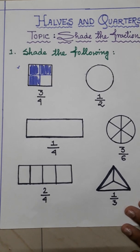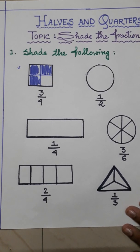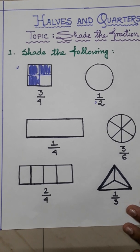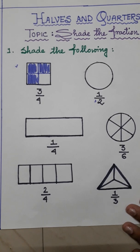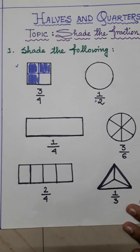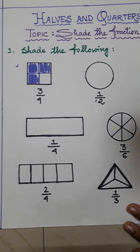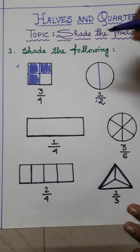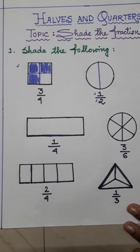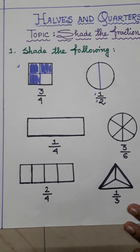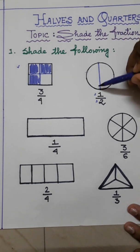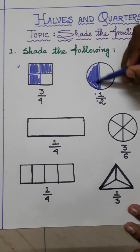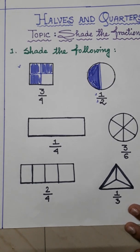Now here, the next shape given is a circle. What is in the denominator? 2. That means we have to divide the circle into 2 parts. So here I am dividing the circle into 2 parts. Now what is in the numerator? 1. That means I will shade 1 part of the circle. So here I am shading 1 part of the circle.